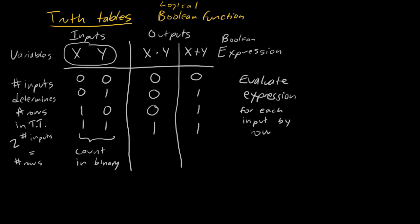I can do this because I've enumerated all possible inputs by counting in binary. Counting in binary guarantees I've looked at every possibility — going from zero to three covers all four possible inputs. Very important: if you don't draw your truth table this way — labeling inputs on the left and counting in binary — it's not a truth table. It's just numbers on a page.